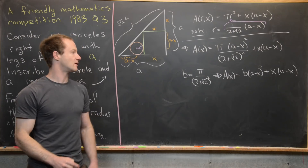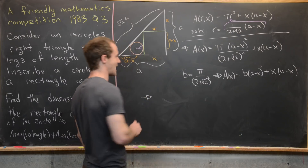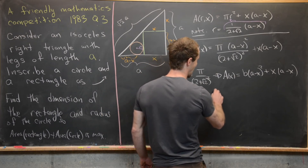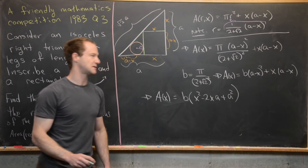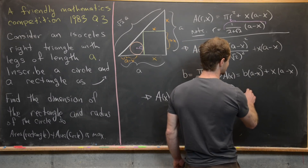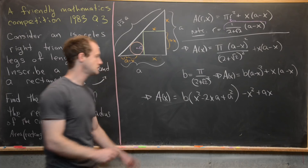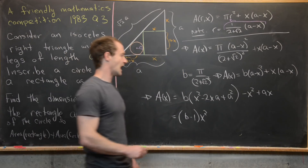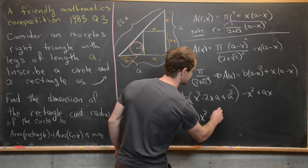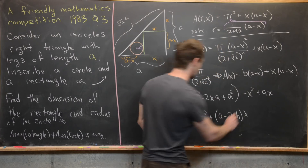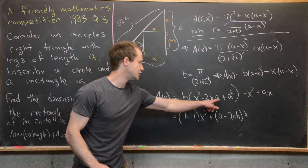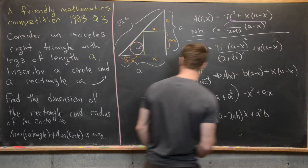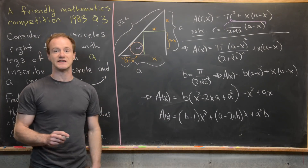Notice that is a quadratic function in the variable X. Multiplying out, A(X) = B·(X² − 2XA + A²) + (−X² + AX). Collecting terms: the X² terms give (B − 1)·X², the X terms give (A − 2AB)·X, and the constant term is A²·B. So our function is A(X) = (B − 1)·X² + (A − 2AB)·X + A²·B, which we seek to maximize.